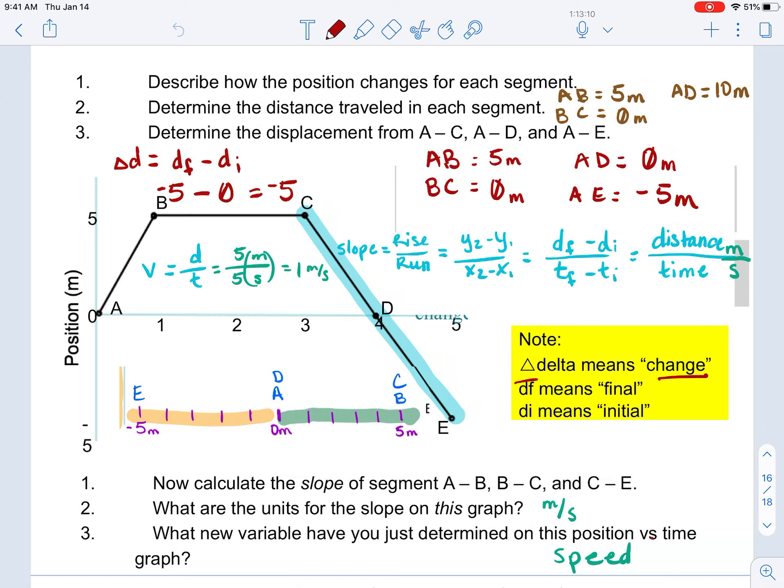So, for segment AB, it's just five. BC, it is zero because my position was the same. So, I would be subtracting a position of five minus a position of five. So, there is no change in position there.